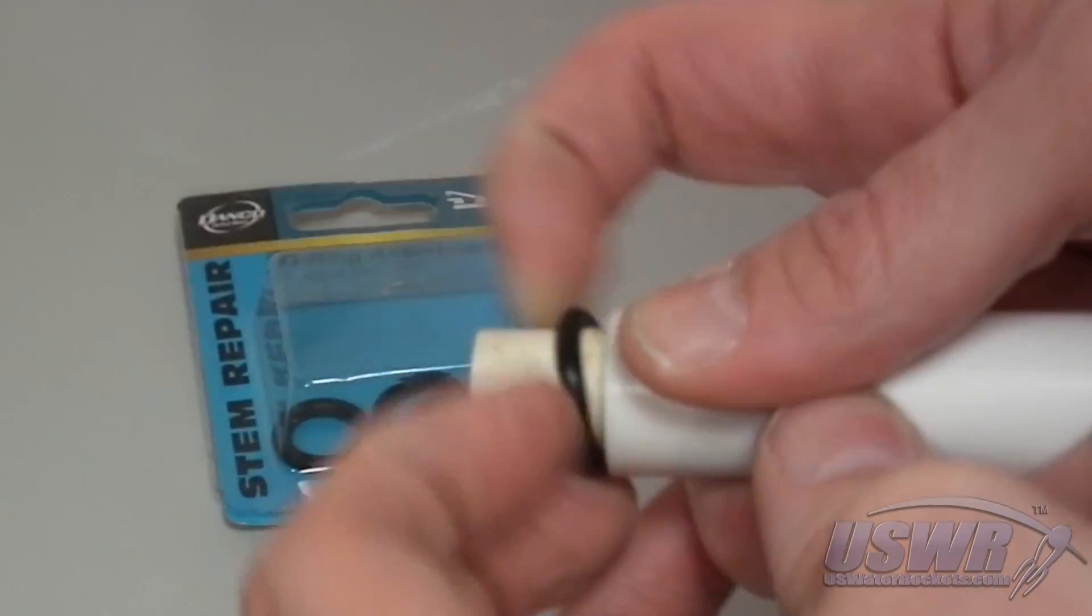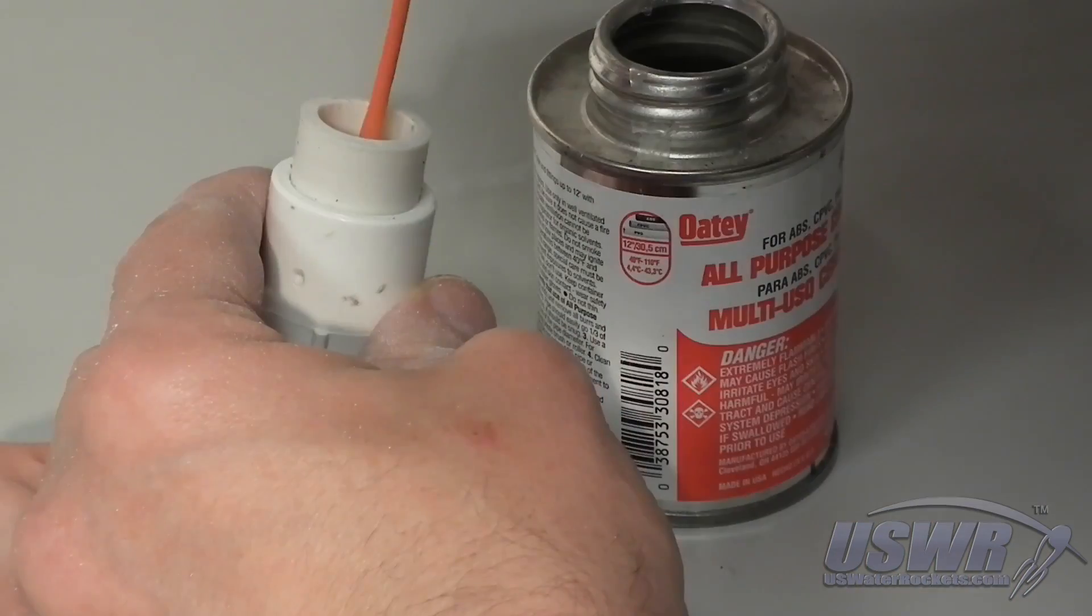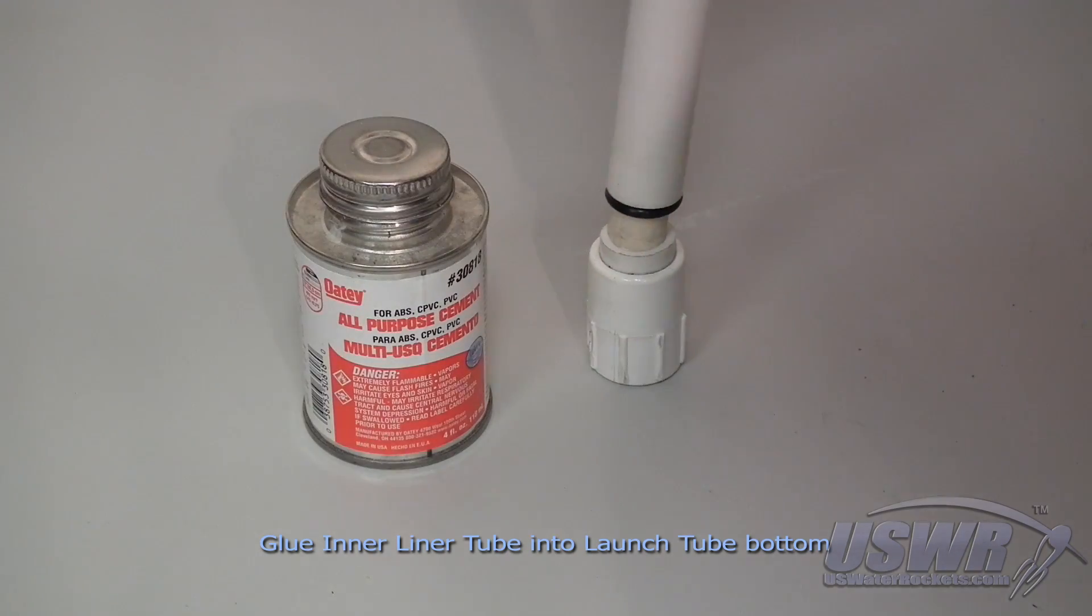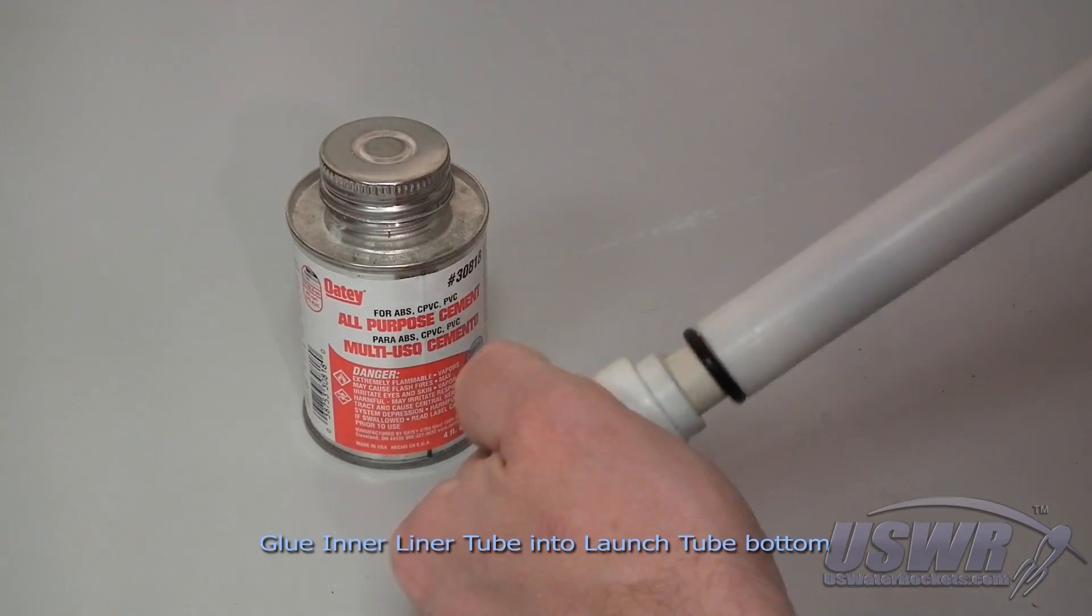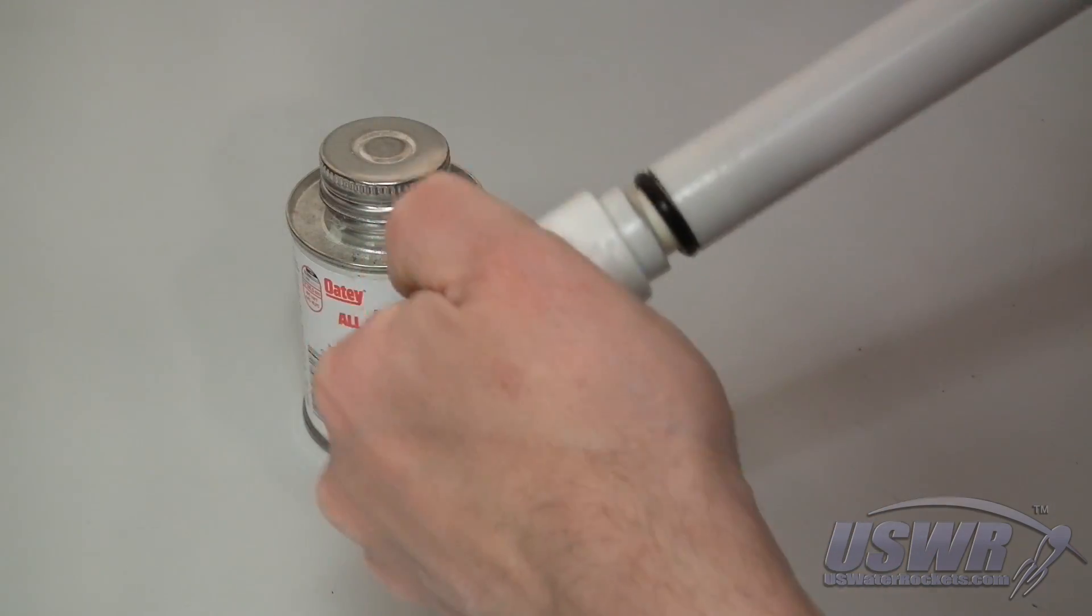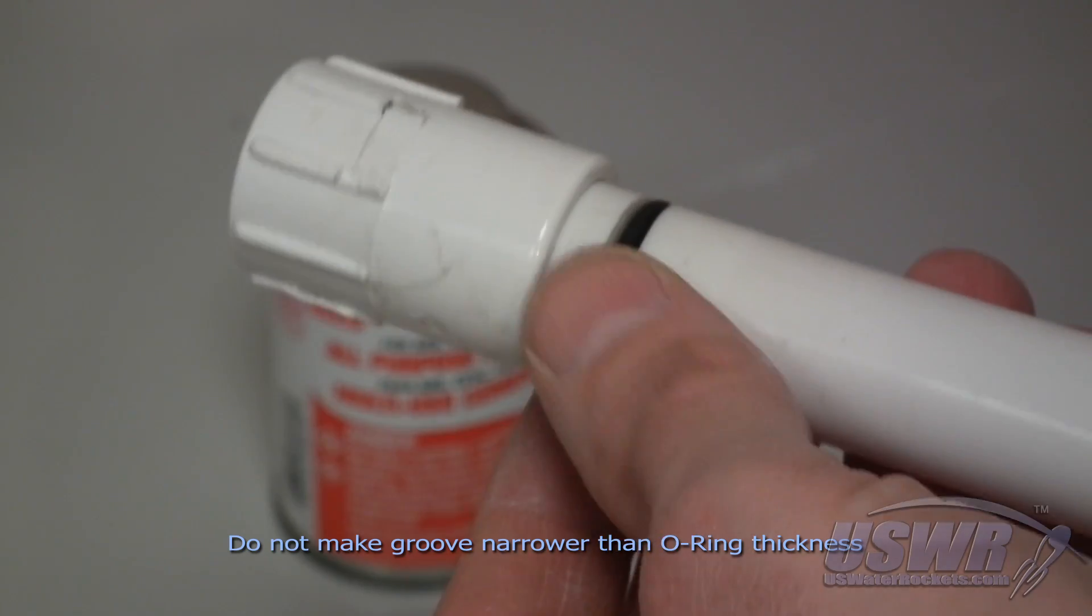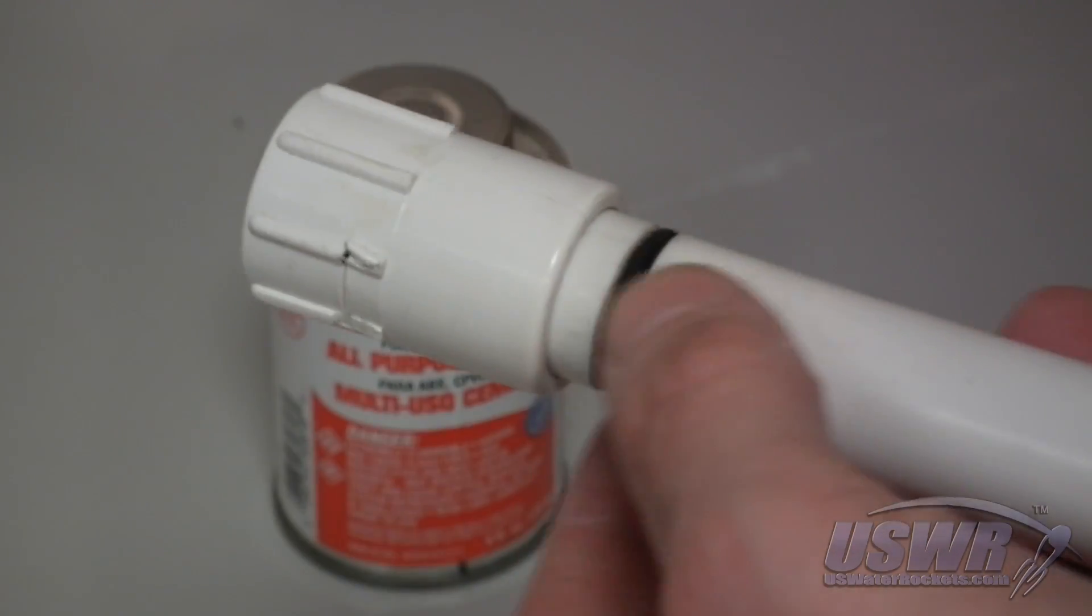Slide a number 94 o-ring over the inner liner tube. Glue the inner liner tube into the bottom section of the launch tube. Stop pushing together the sections when they make contact with the o-ring. Avoid pinching or squeezing the o-ring between the launch tube sections.